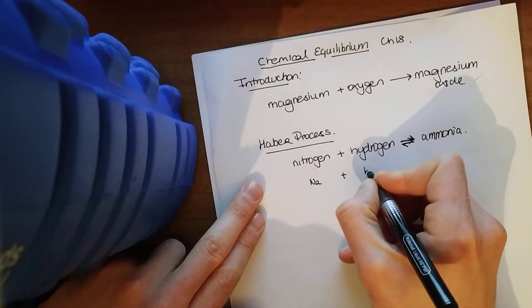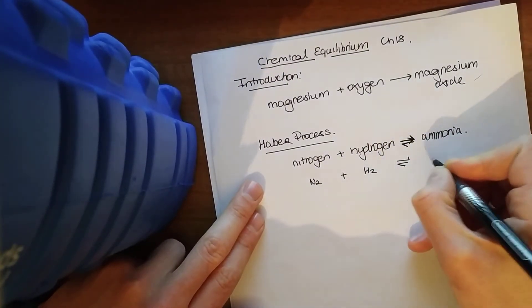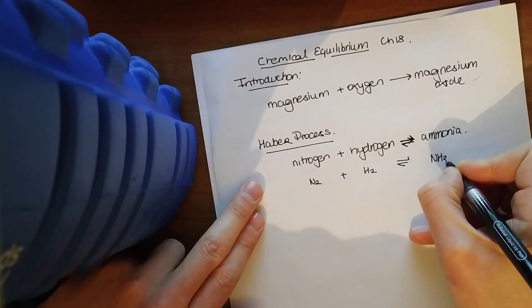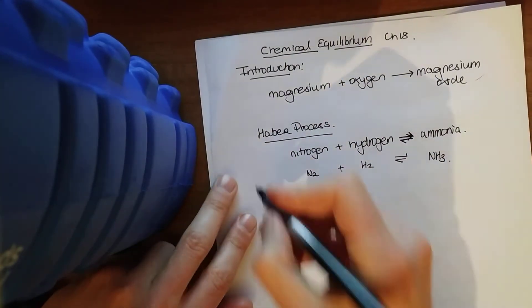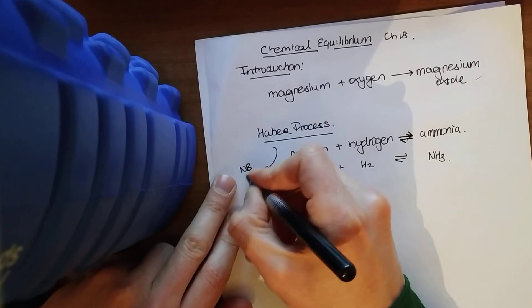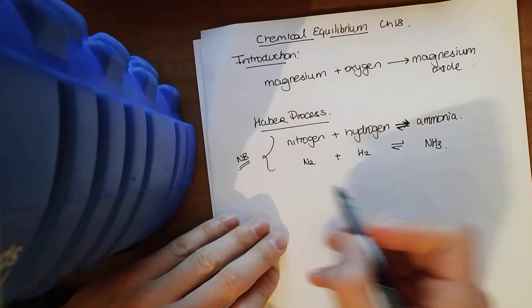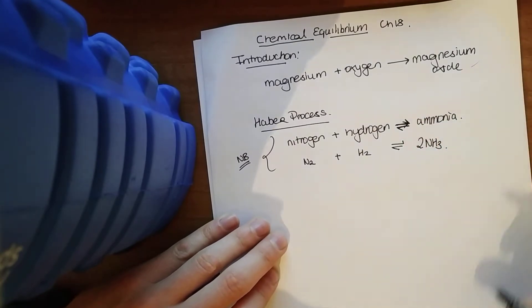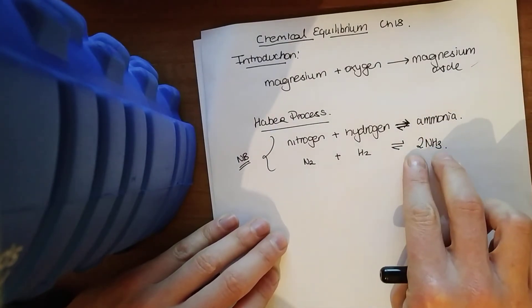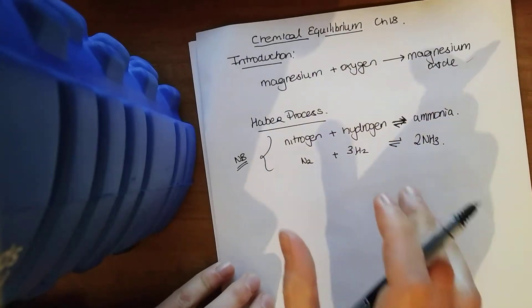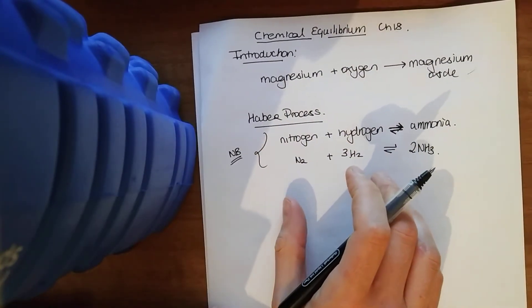That's what's known as a reversible reaction. So say I have my nitrogen, hydrogen, we have an arrow looking like that to form our ammonia. Now we'll balance that up because it is a very famous reaction that we do need to learn. So I've got two nitrogens on the left, I need two on the right, so I'll have a big two there. And I've got six hydrogens on the right, throw that three there.